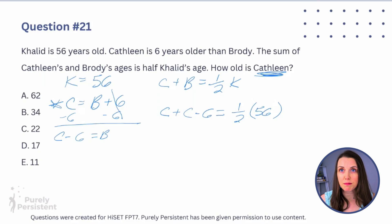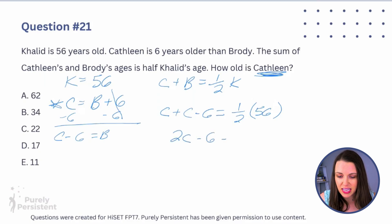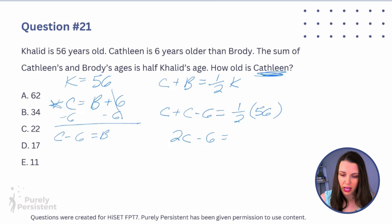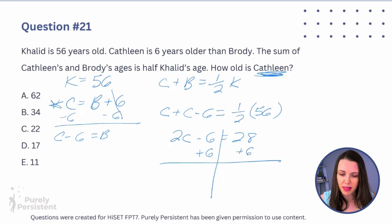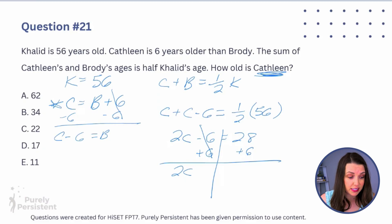Combining like terms: Kathleen + Kathleen gives 2K, so 2K − 6 = ½ of 56, which is 28. Now I isolate the variable — add 6 to both sides, the −6 cancels, and I'm left with 2K = 34.